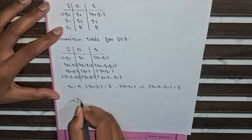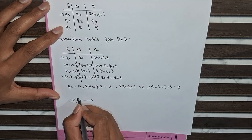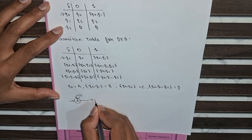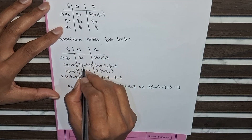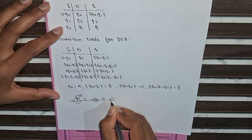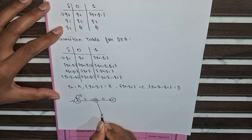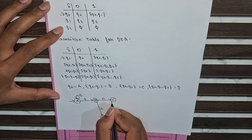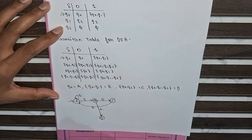The initial state will be A. With input symbol 0 it is a self-loop. With input symbol 1 it goes to q0,q1 which is B. Now at state B: with input symbol 0 it goes to q0,q2 which is C. With input symbol 1 it goes to D. At state C: with input symbol 0 it goes back to q0 which is A; with input symbol 1 it goes to B.